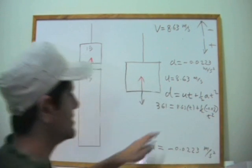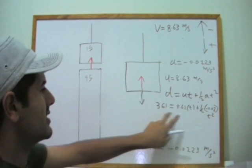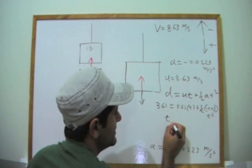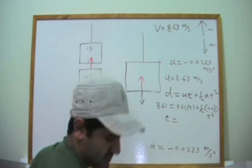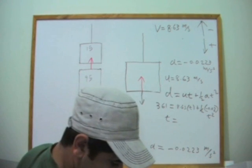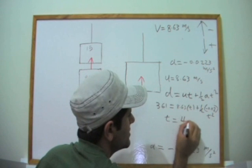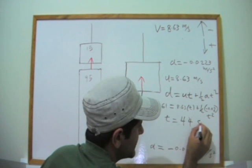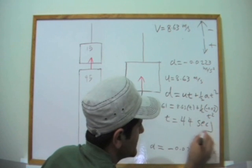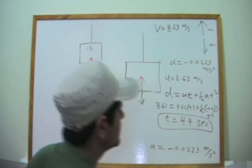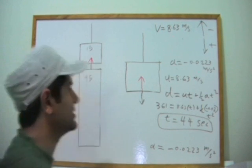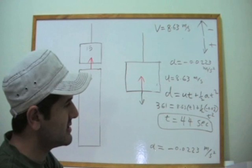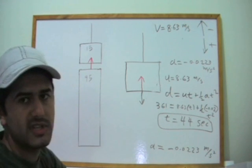So, as you see here, I've got a quadratic. If I solve this quadratic, my T will come as 44 seconds. So the building, if it was to crush what's below it, it should have taken at least 44 seconds.